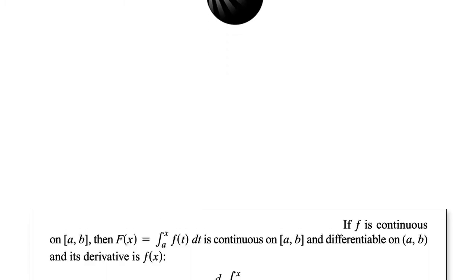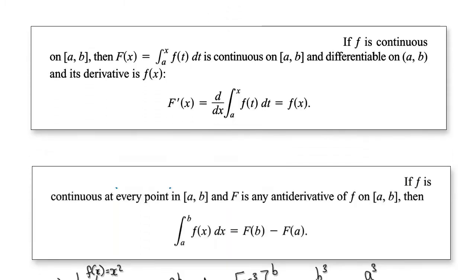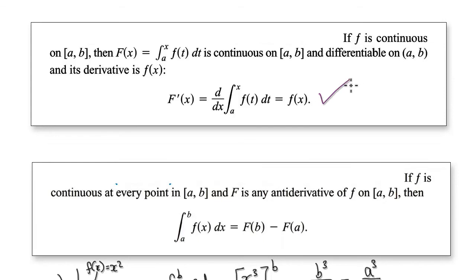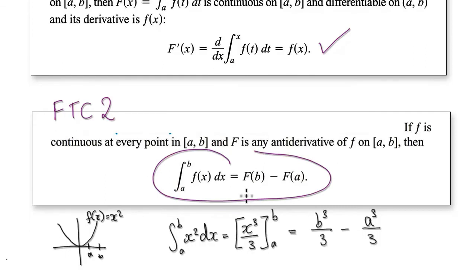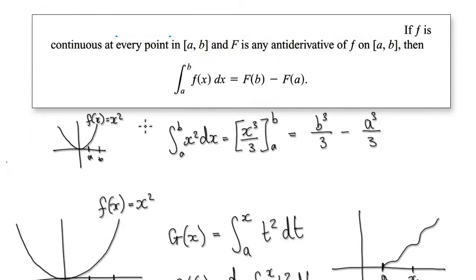Now that we understand the fundamental theorem of calculus 1, we need to look at the fundamental theorem of calculus 2, which is this thing here. As a reminder, if you're trying to work out the area from A to B of, let's say, x squared — so that means you want to find this area here.